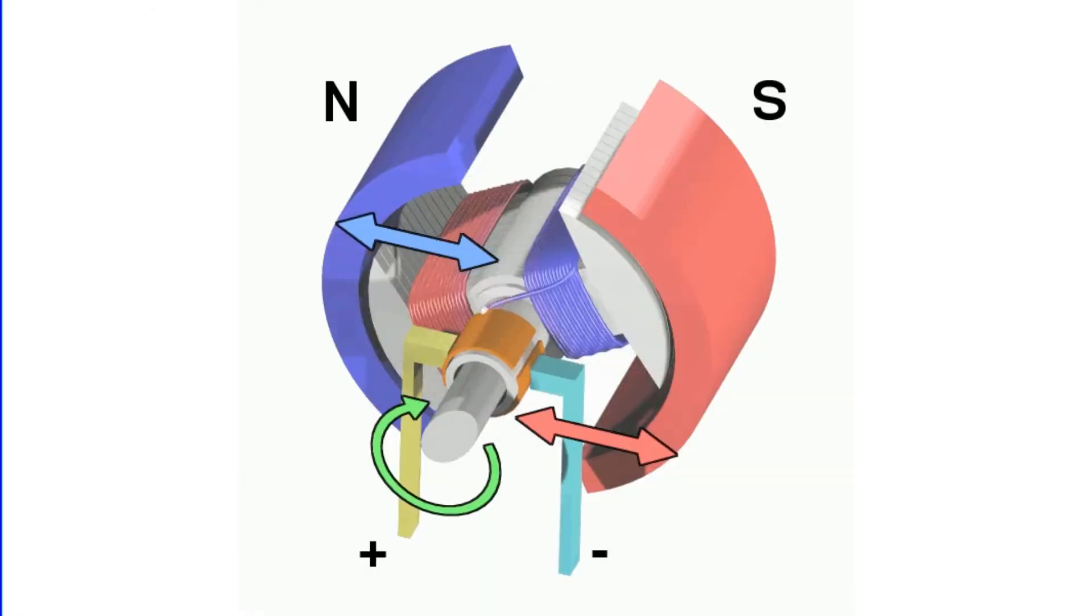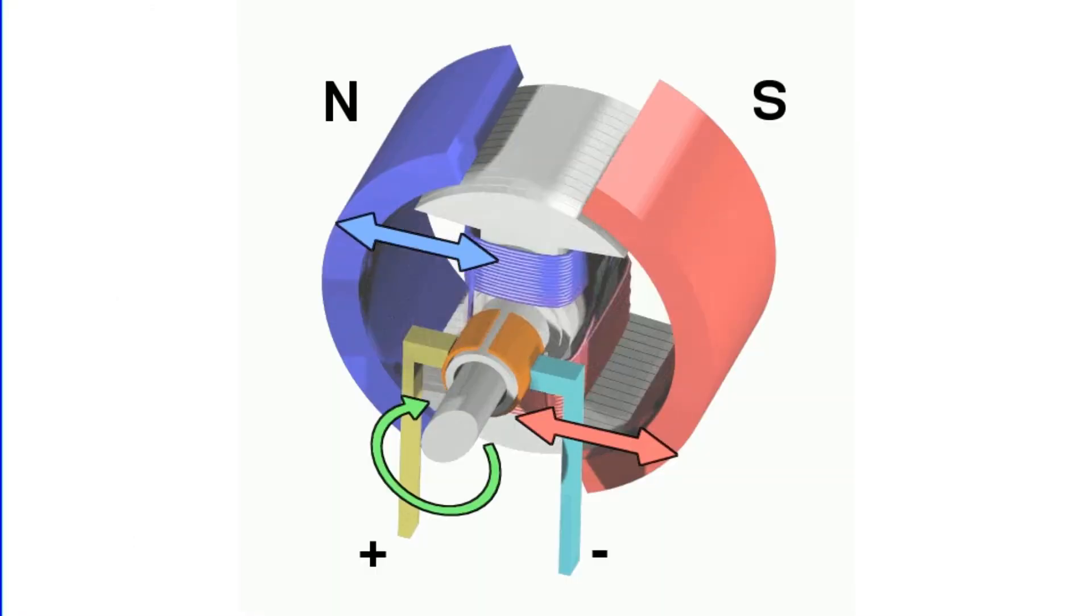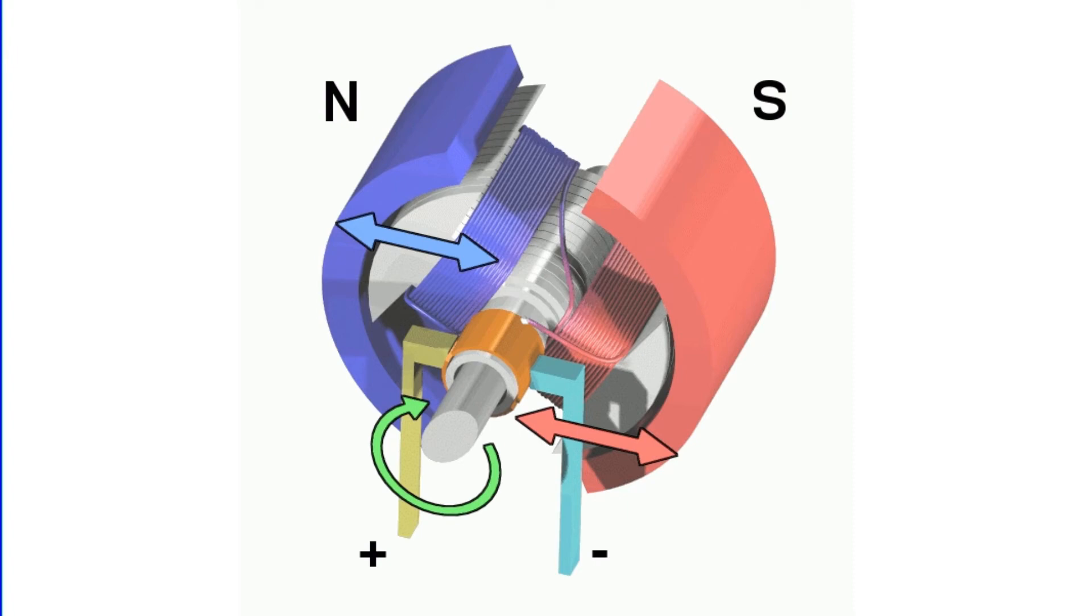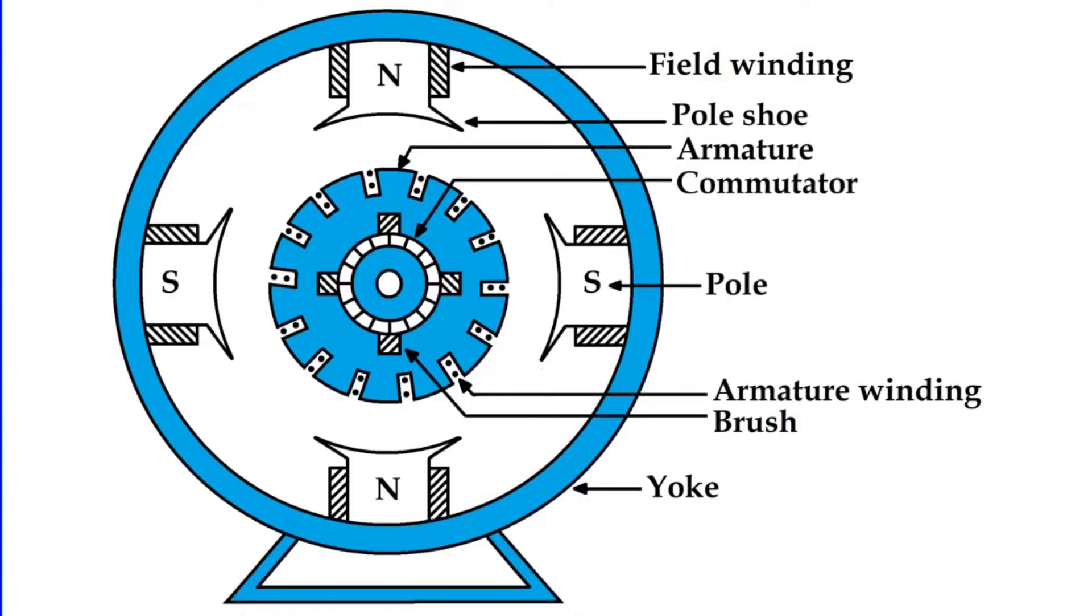Today, we'll dissect a DC generator, exploring its essential components, including the yoke, poles, field winding, armature, commutator, brushes, and bearings. In this video, we will also explain the construction and working of a DC generator in detail, as well as its types and applications.